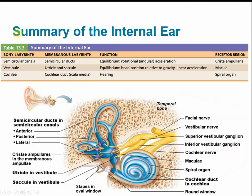Summary of the inner ear: the semicircular canals have the crista ampullaris as their receptor region and function for rotational movements. The vestibule in the center contains the maculae as sensory receptors in the utricle and saccule, functioning for balance and equilibrium — specifically linear acceleration such as moving forwards, backwards, up, or down. The cochlea functions in hearing reception, with the spiral organ wrapping around the cochlear duct as its receptor region.